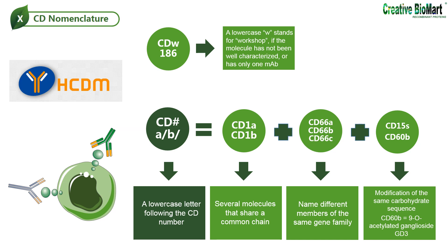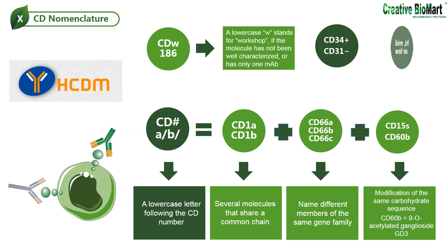The CD nomenclature is also frequently used to describe lymphocyte and leukocyte subsets. The presence or absence of a specific antigen from the surface of a particular cell population is denoted with plus or minus, respectively. For example, a CD34+, CD31- cell is one that expresses CD34 but not CD31. Some cell populations can also be defined as high, mid, or low — alternatively bright, mid, or dim — indicating an overall variability in CD expression, particularly when compared to other cells being studied.